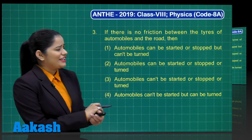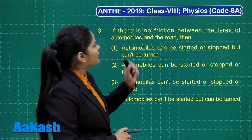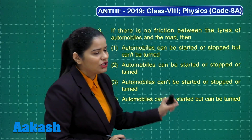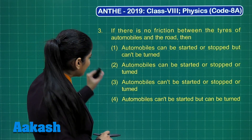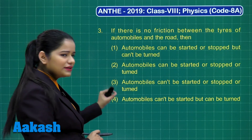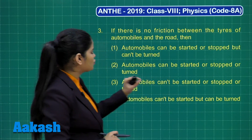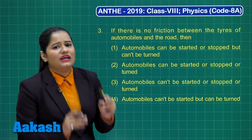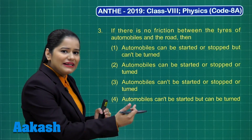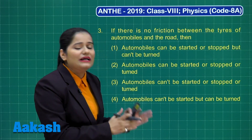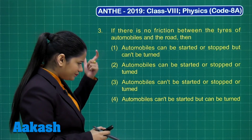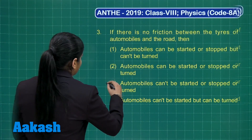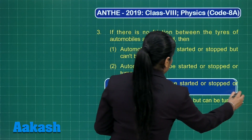The third question says: if there is no friction between the tires of automobiles and the road, then — ? Option one: automobiles can be started or stopped but cannot be turned. Option two: can be started, stopped, or turned. Option three: can't be started, stopped, or turned. Option four: can't be started but can be turned. Friction is required to move, stop, and change direction of an object. Without friction, automobiles can't be started, stopped, or turned. The correct answer is option three.